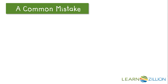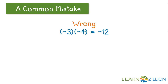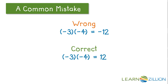Let's take a look at another common mistake. A student may incorrectly multiply negative 3 times negative 4 as negative 12, when the correct answer is positive 12, because a negative times a negative is equal to a positive.